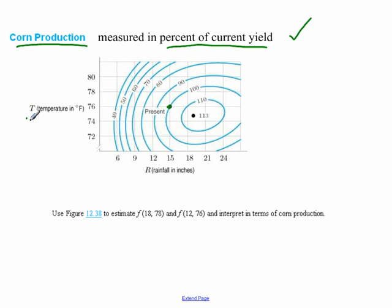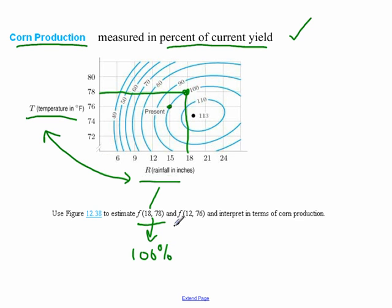If I'm at the 110 section, that means I'm producing more corn. 70% means I'm producing less corn, 70% of my current amount. And what we're looking at this, we're looking at our percent yield in terms of temperature and rainfall. So these are my two variables. So given this, let's interpret f of 18, 78. Well, that's saying when my rainfall is 18 and my temperature is 78. So if we go from 18 up to 78, what does this equal?